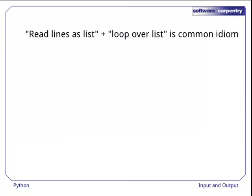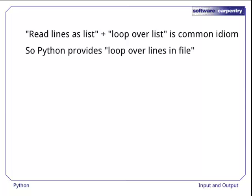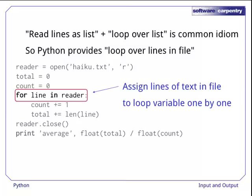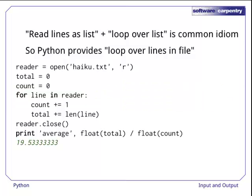Reading the file's contents as a list of lines, then looping over that list, is a very common idiom, so Python allows programs to just loop over the file line by line. Here's the average line length program done that way. The for loop assigns the lines in the file to the variable line one after another, halting automatically when the file is exhausted. And yes, its output is 19.53333 and so on.